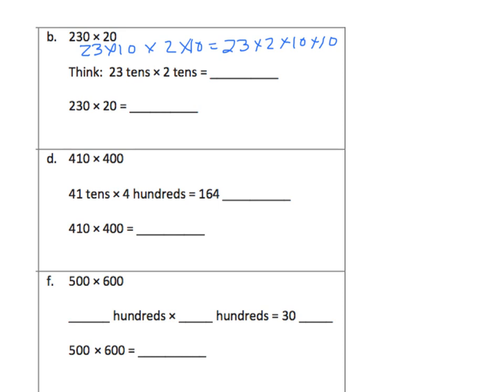So 46 times 100. Again, we're multiplying 10 times 10 using the unit form here. 10 times 10 would be 100.